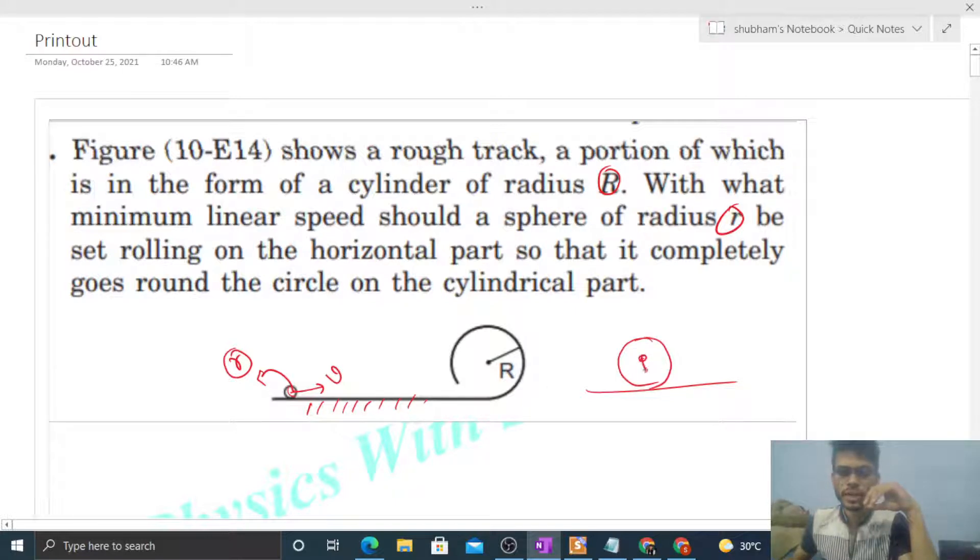Because if you draw the free body diagram, mg will act and normal reaction will act. Its center is moving with velocity v and we have rotated it about center of mass with some omega so that pure rolling occurs. The point of contact will be at rest - relative velocity of point of contact with respect to the ground will be zero. So slipping will not occur, meaning friction force will not act. So in the horizontal direction, no force will act, meaning the velocity v in horizontal direction will be constant.